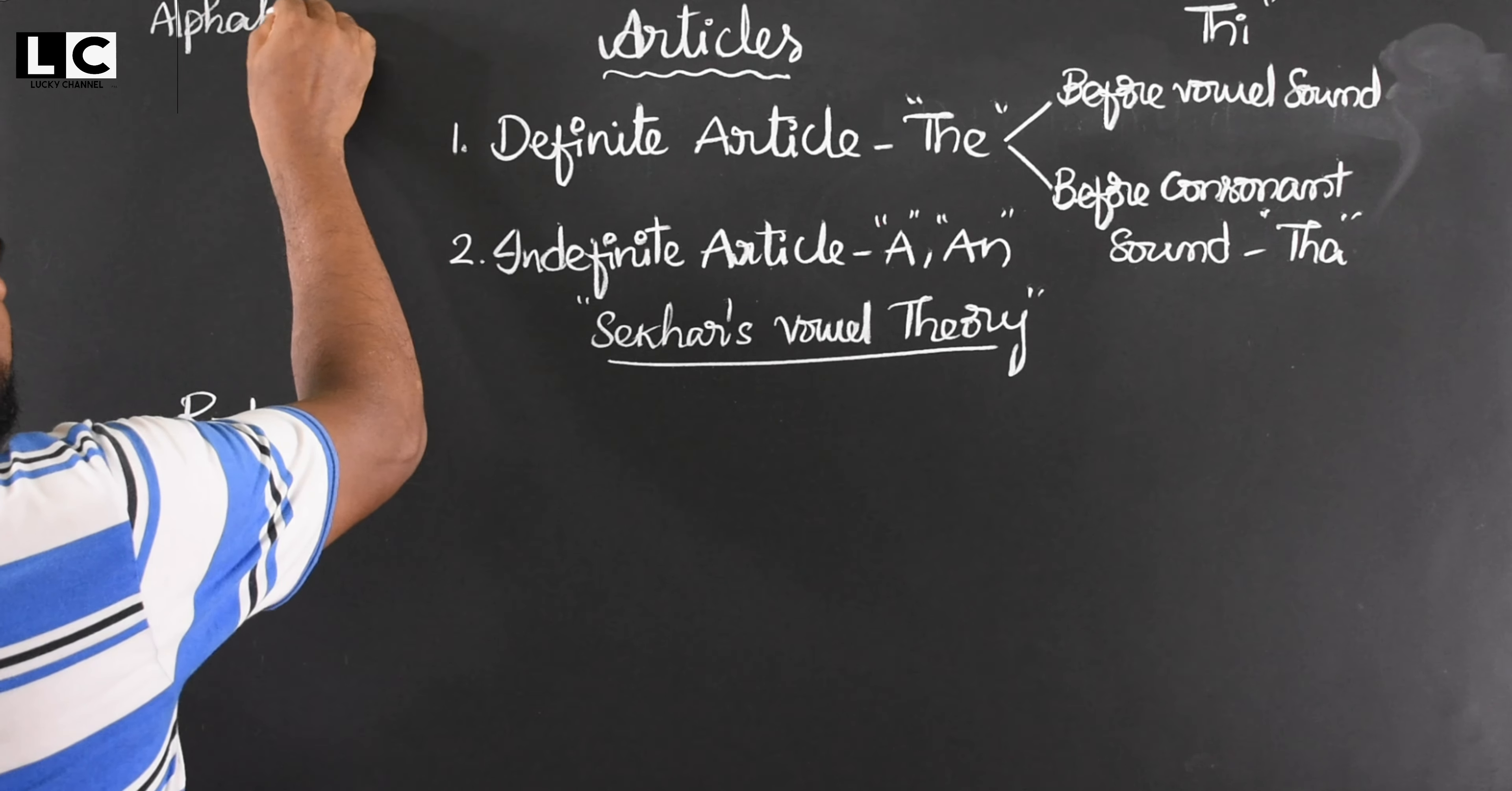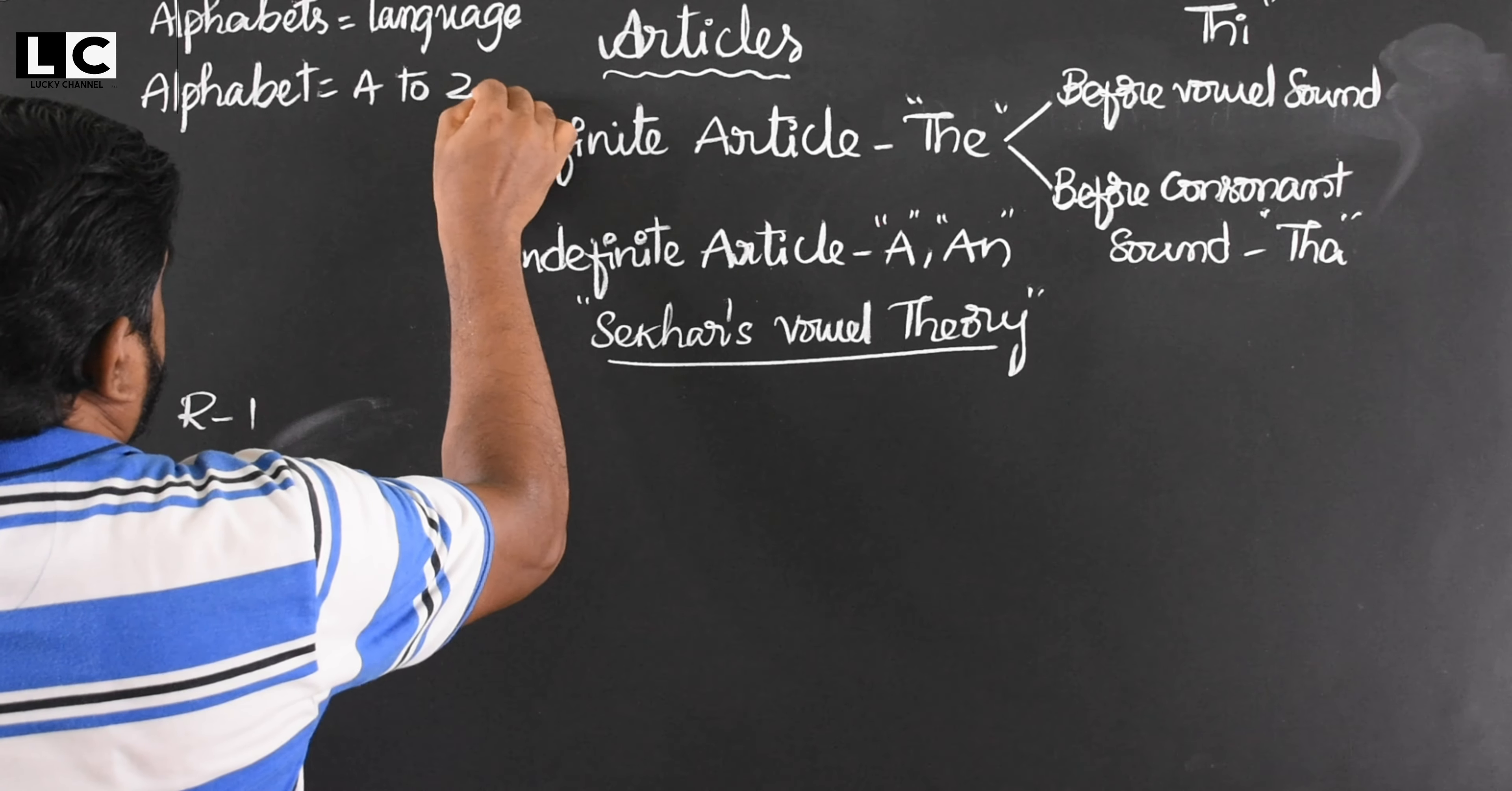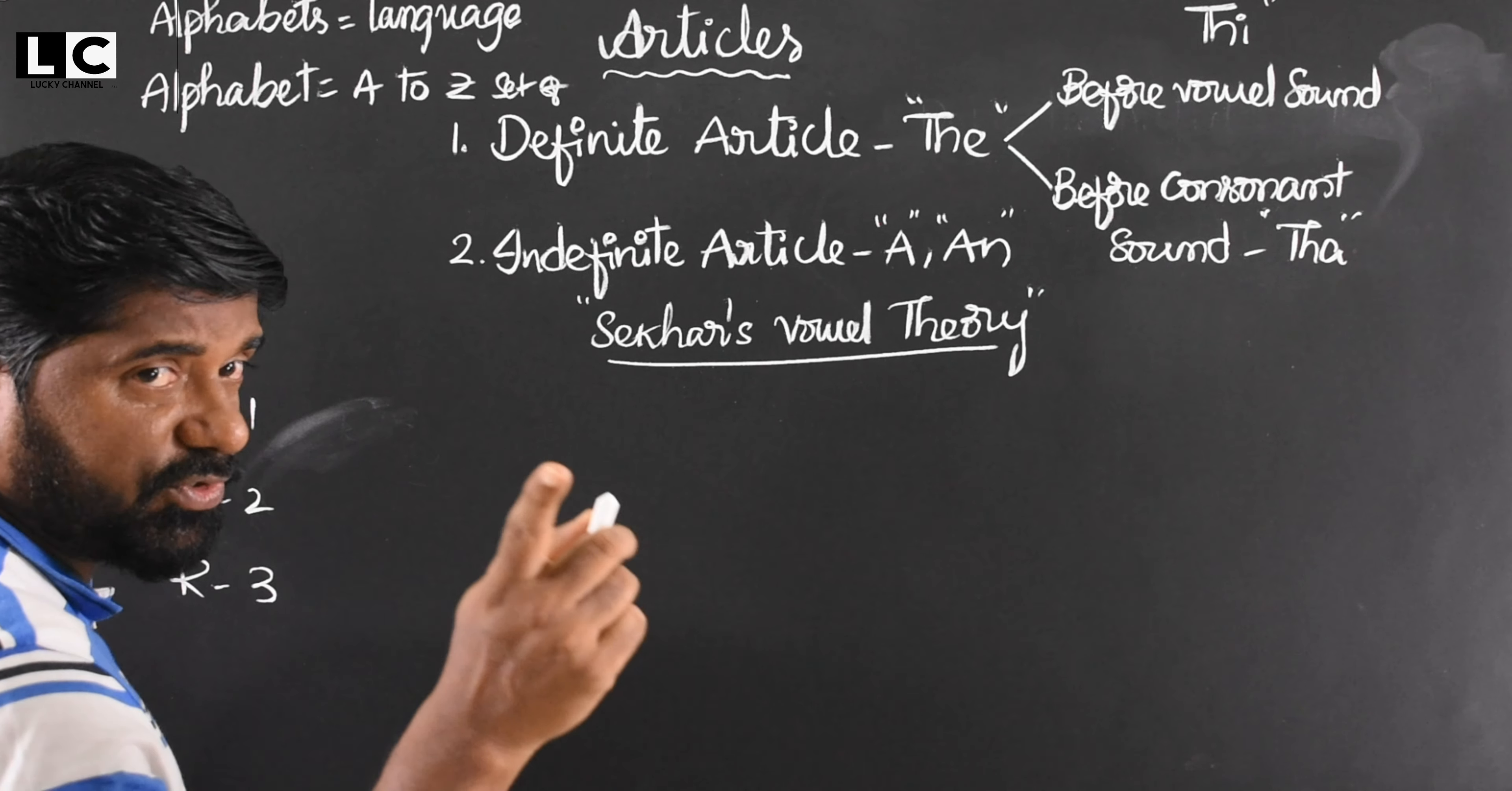Here, three rounds are there and 26 alphabet letters. How many alphabets in English language? Your answer is 26, right? That is wrong. Alphabets means language. Alphabet means A to Z set of letters, 26 letters. But alphabets means language. This is very important for spotting errors in articles. Shaker's Vowel Theory: How many letters are there in English alphabet? 26.